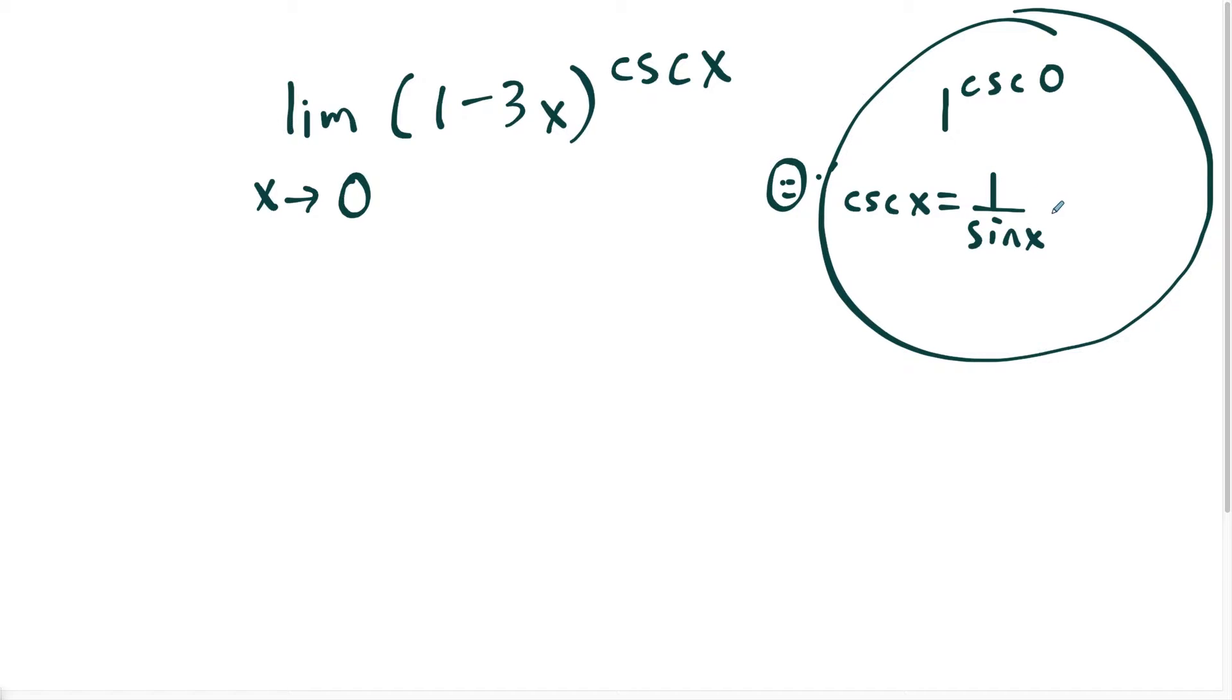so one over zero is either going to plus or minus infinity. So either way, that's telling me that I have an indeterminate form. So when I have an indeterminate form, that means that I have to do something else to actually evaluate my limit.